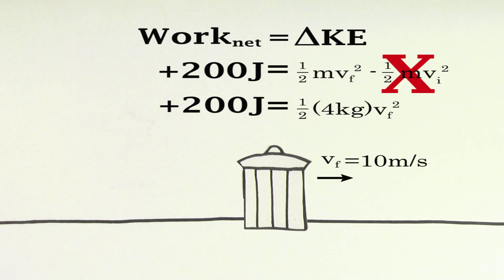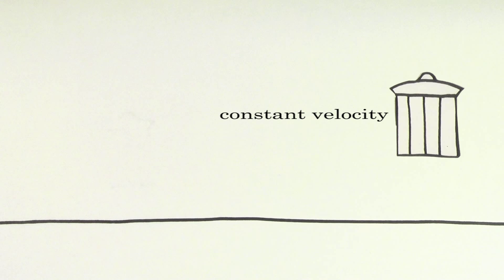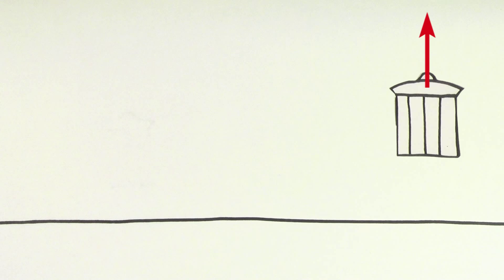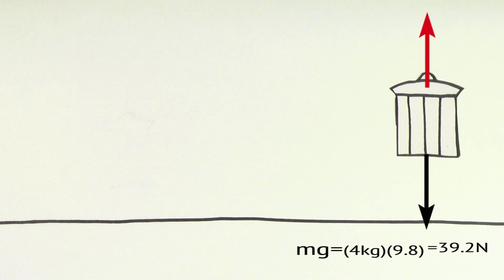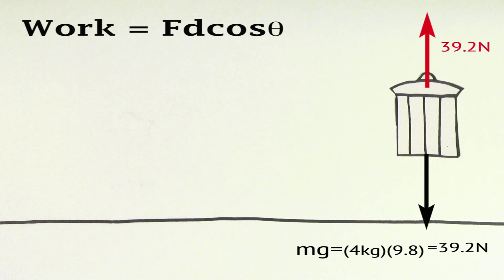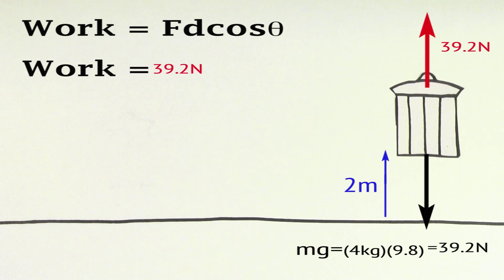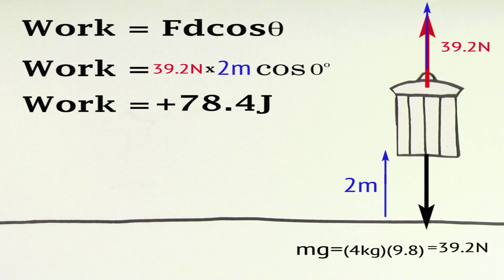This time, let's say you take the trash can and lift it upwards with a constant velocity for a distance of 2 meters. In order to lift the trash can up with a constant velocity, you need to push with a force equal to the weight of the trash can, which means you have to push upwards with a force of 39.2 newtons. So to find the work done by the force that you exert, the force is 39.2 newtons, the displacement is 2 meters, and the angle between the force and the displacement is 0 degrees because the direction of the force you exert is in the same direction as the displacement of the trash can. So the work done in lifting up this 4 kilogram trash can is 78.4 joules.